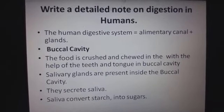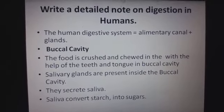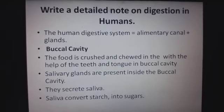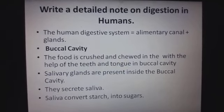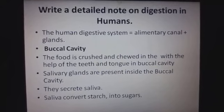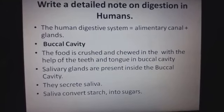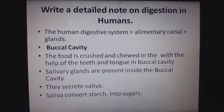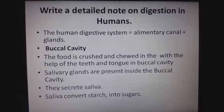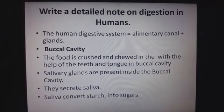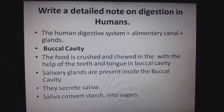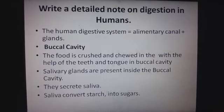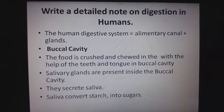Good morning students. Today we will start our next chapter: Nutrition in Animals. The very first topic is the digestive system in human beings. The human digestive system consists of two parts: first, the alimentary canal, and second, some glands. The alimentary canal starts from the buccal cavity and ends at the anus.